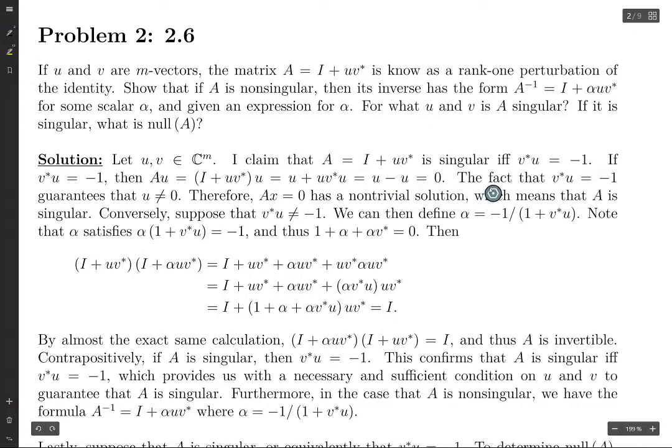The fact that V star U equals negative 1 guarantees that U cannot be the 0 vector, because if U were the 0 vector, then V star U would be 0. Therefore, the equation AX equals 0 has a non-trivial solution, i.e., the solution X equals U, and this means that A is singular. You can even think of this as: if AX equals 0 has a non-trivial solution, then 0 is an eigenvalue of A, which we discussed previously. That's equivalent to A being a singular matrix.